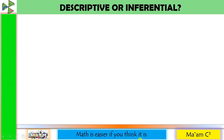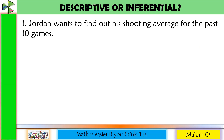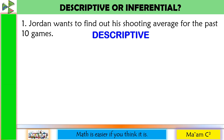Let's have an activity: descriptive or inferential? Number one — Jordan wants to find out his shooting average for the past 10 games. Notice the word 'past' here. This means the data is already available. We just want to make calculations to determine or describe the shooting average of Jordan. This is descriptive statistics.